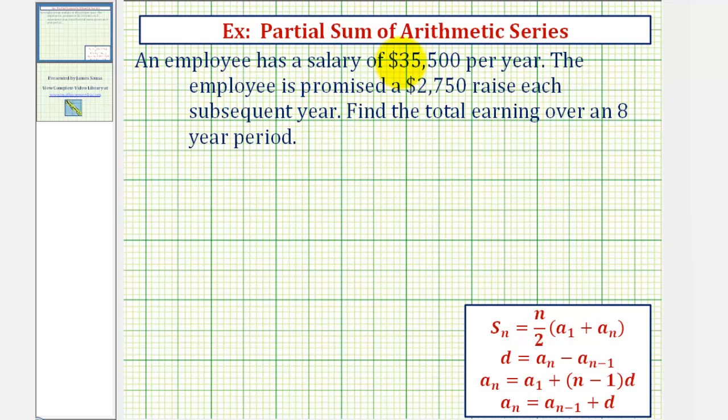An employee has a salary of $35,500 per year. The employee is promised a $2,750 raise each subsequent year. Find the total earnings over an eight year period.